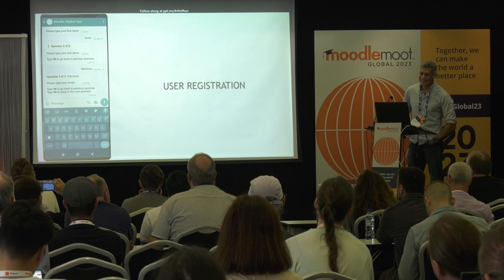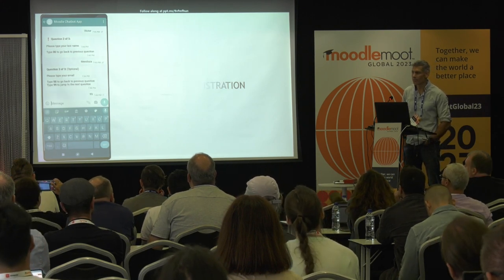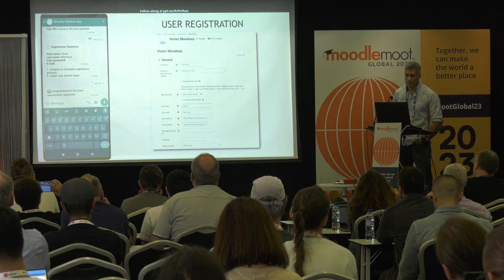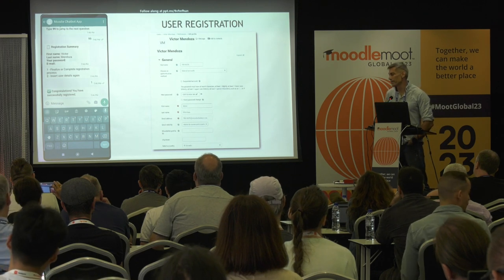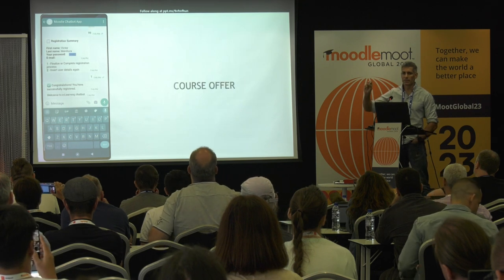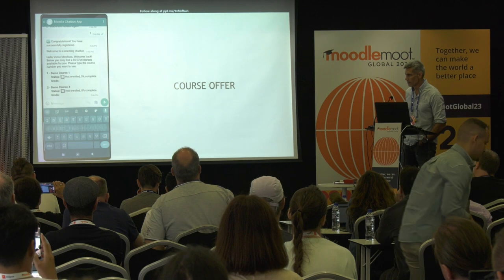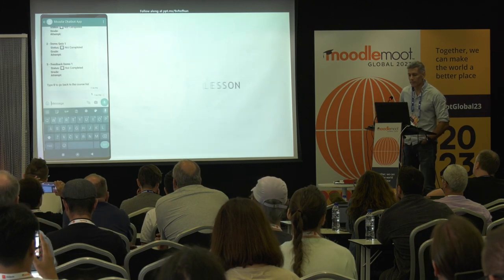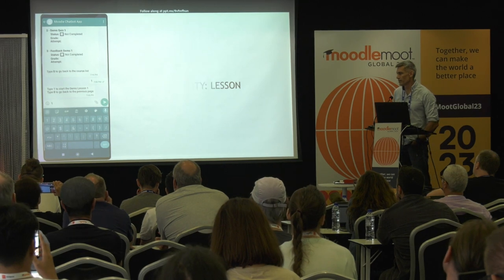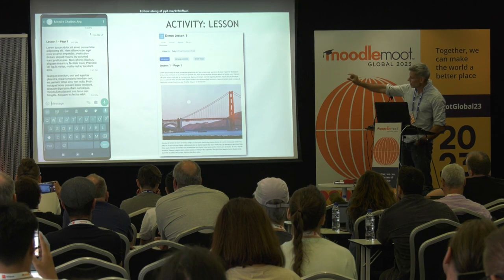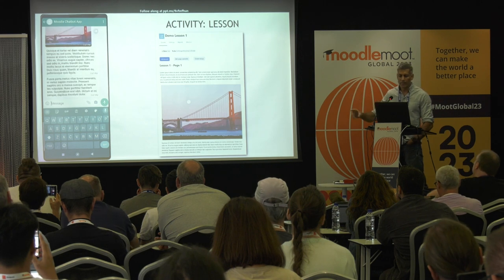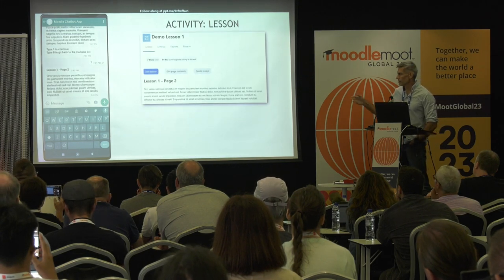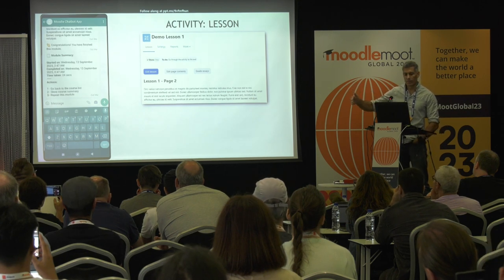Once registered, we show the course offer. We have a custom property on courses — you need to mark a course as chat-compatible for it to appear here. You select your course and start it. The content is delivered as message bubbles — each paragraph is rendered as a separate message bubble. If there is an image, it comes in as part of the chat. You continue through all the pages and eventually reach a point where we mark completion.